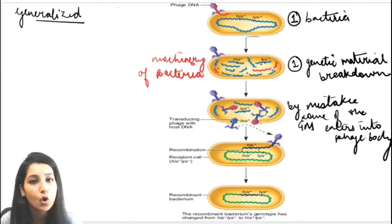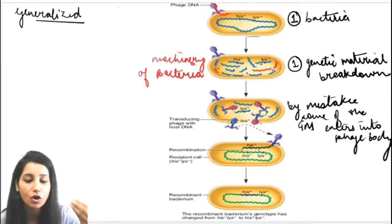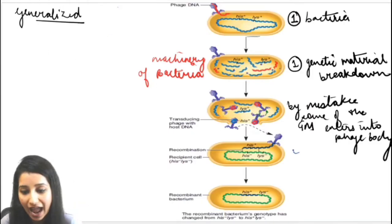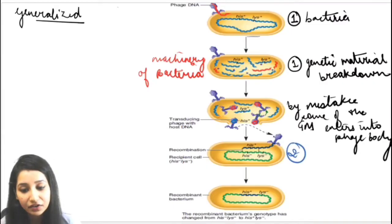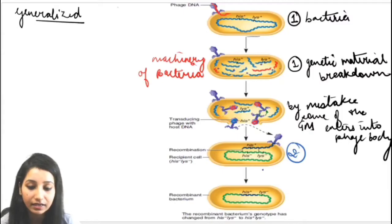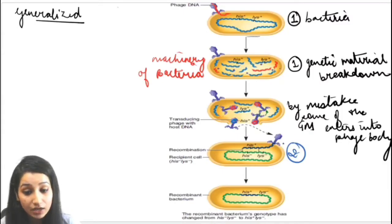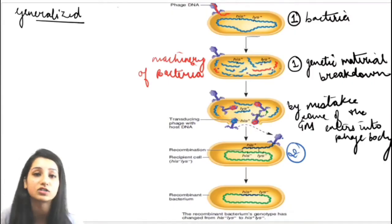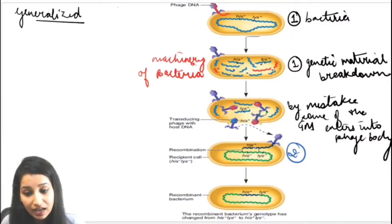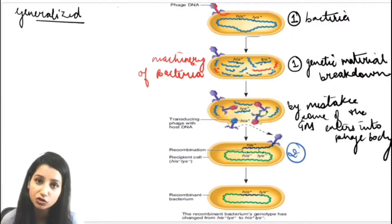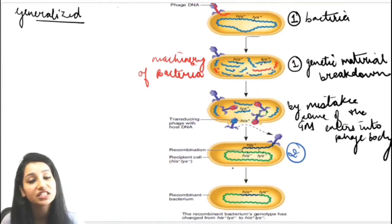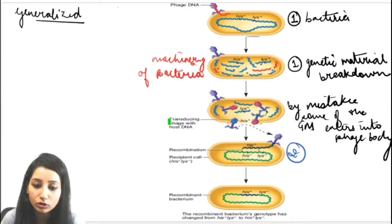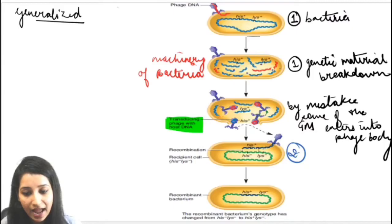After this, the phage will go to attack another bacterium. So now it will attack the second bacterium. Once again, it will insert the genetic material into the second bacterium. But now, this phage has both its own genetic material and some of the first bacterium's genetic material. It will insert this DNA into the second bacterium.